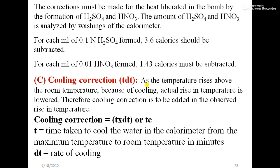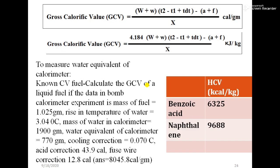You can see the formula directly. Gross calorific value equals (W + ω) × [(t2 - t1) + dt - (a + f)] divided by x. The formula is the same but cooling correction is added and acid correction and fuse wire correction is subtracted from total value divided by x.